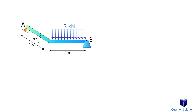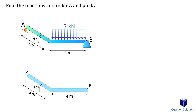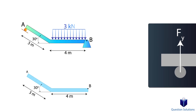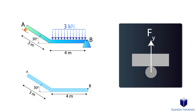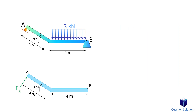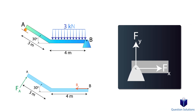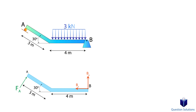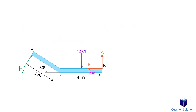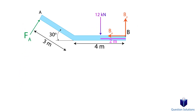Let's take a look at this problem, where we need to find the reactions at roller A and pin B. The first step is to draw a free body diagram. Since it's a roller at A, it will only have a vertical reaction. At B, we will have both the x and y reactions. The distributed load has to be expressed as a resultant force, which can be found by multiplying the load by the length — giving us 12 kN — placed at the center, 2 meters away from point B.